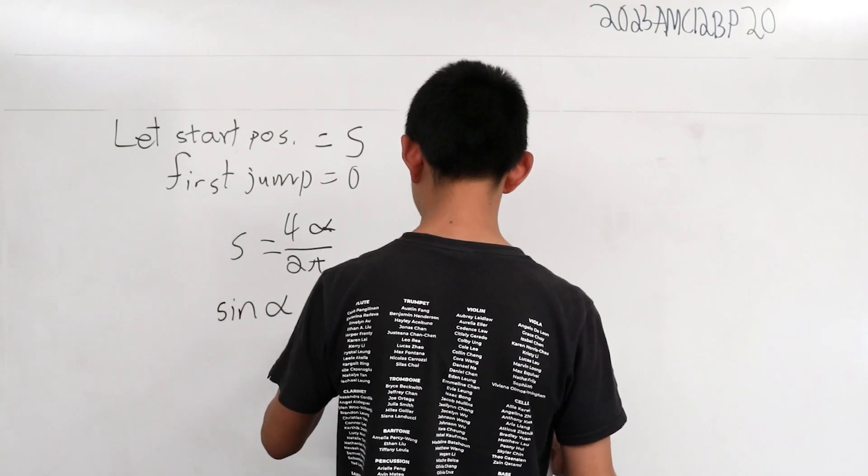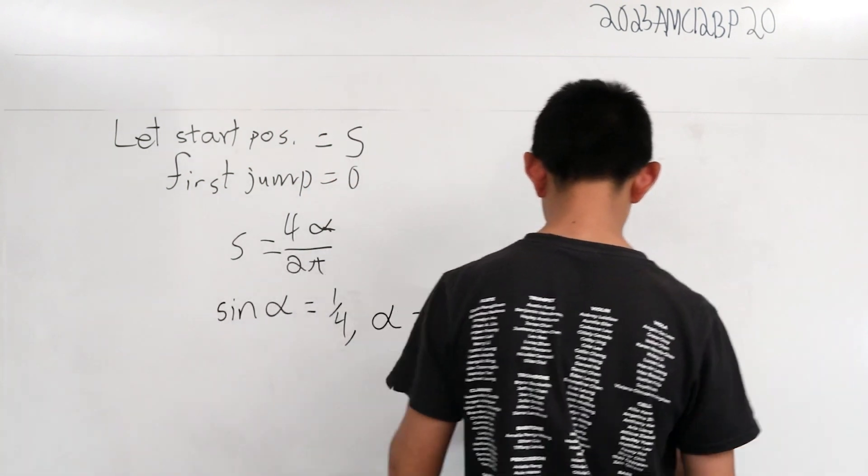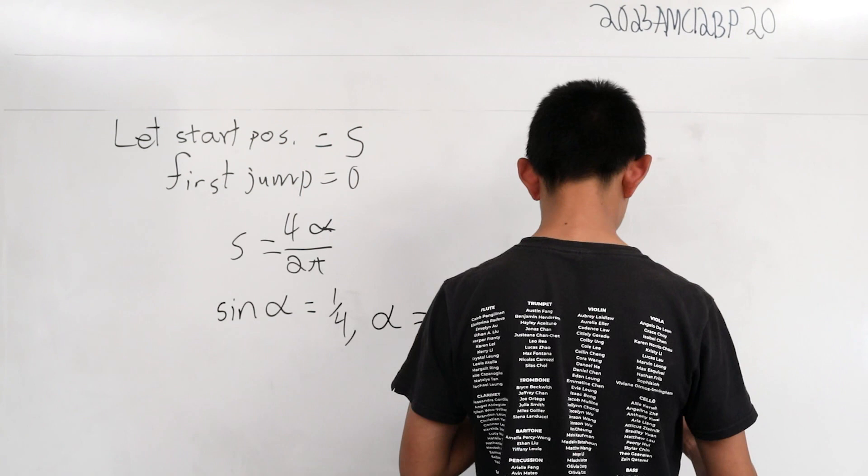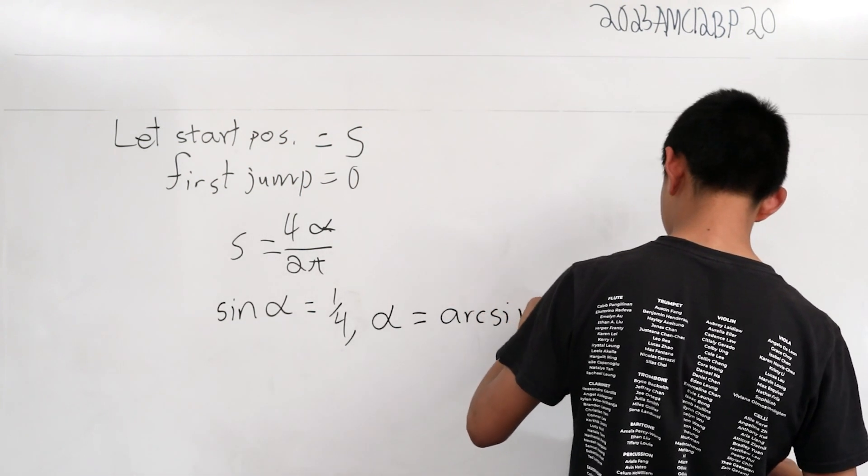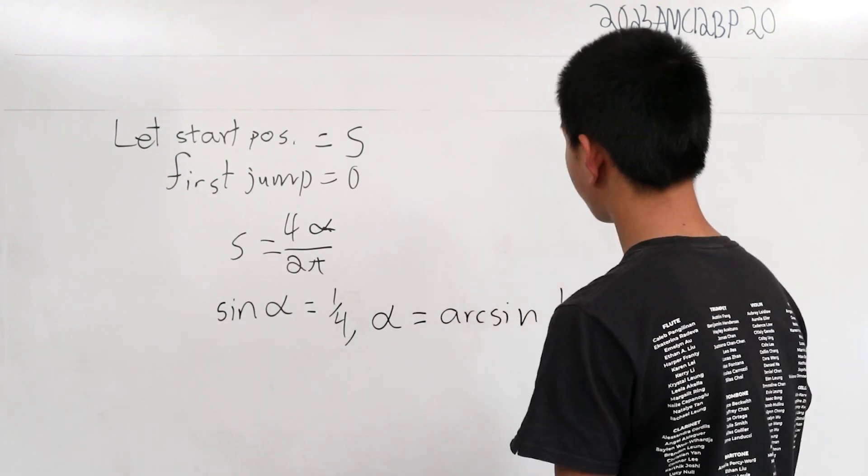So that means omega is equal to the arc sine of one-fourth. We now know the value of omega,